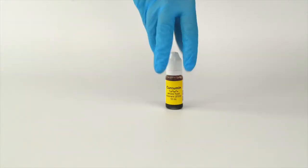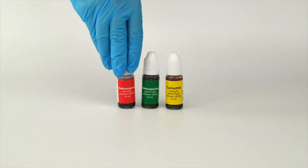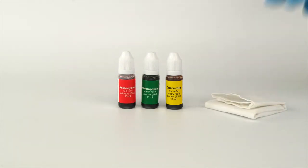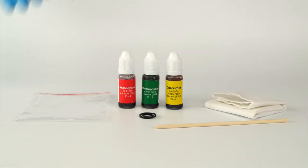For the tie-dye experiment, you will need solutions of curcumin, chlorophyllin, and anthocyanin. You will also need the cloth, wooden stick, two rubber bands, and a plastic bag from the experiment set.